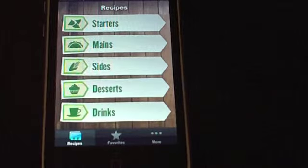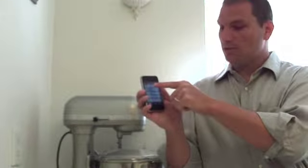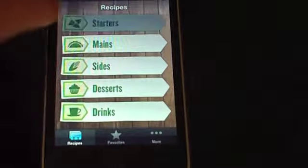This app is essentially just a simple recipe guide. When you open up the app, there are starters, mains, sides, desserts, and drinks. You click on any one of these navigation items, so let's say starters here, and it'll give you a list of the various recipes.